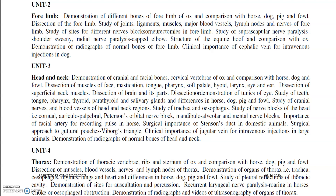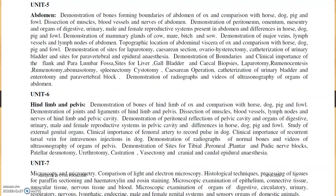Head and neck also — the same — you will be having Vibos triangle examination, radiograph of normal bones, study of nerve blocks in the head. Thorax: you will be having recurrent laryngeal nerve paralysis, roaring in horse — a very important point — demonstration of auscultation and percussion points, and ultrasonography. In abdomen (unit 5), you will be having demonstration of sites of laparotomy, paralumbar fossa examination, demonstration of major veins in the abdomen, major arteries in the abdomen, major lymph nodes in the abdomen, and paravertebral block.